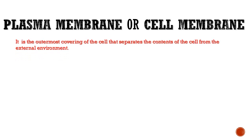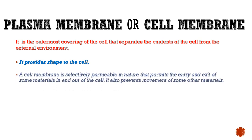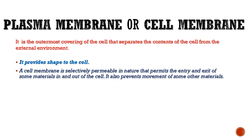What is the plasma membrane, or the cell membrane? It is the outermost covering of the cell that separates the contents of the cell from the external environment. It also provides shape to the cell. The cell membrane is selectively permeable in nature — it permits the entry and exit of some materials in and out of the cell.